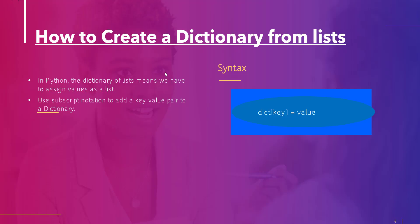Let's start with the first topic: how to create a dictionary from list. When you want to initialize or create a dictionary, you have to assign each key to a list of elements. By using subscript notation we can easily add a key-value pair to a dictionary.